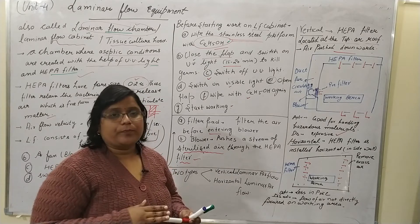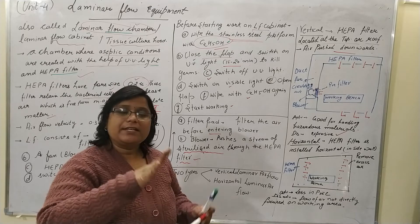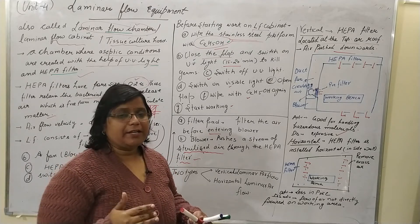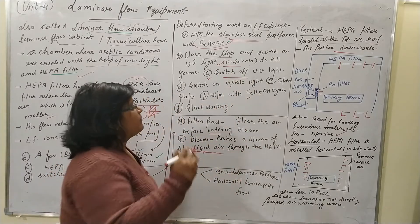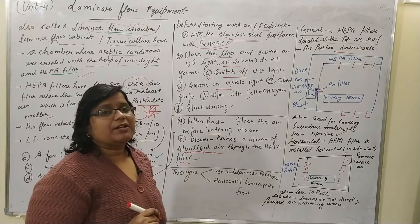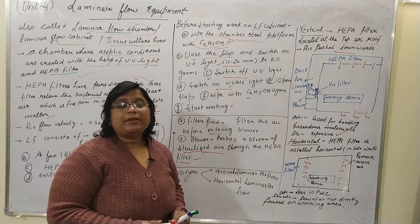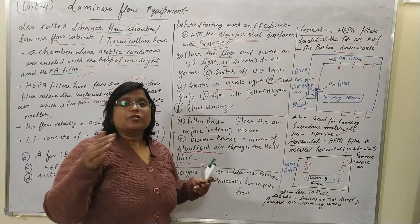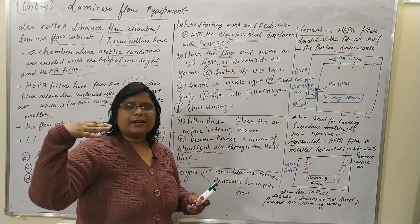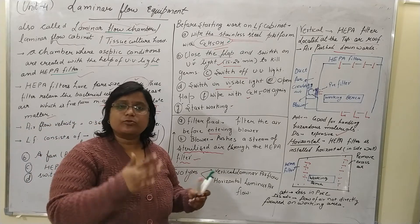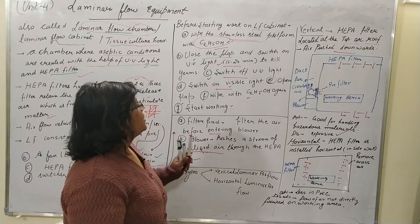UV light is harmful for microorganisms but also harmful for you, so just switch it on and keep away. After 15 to 20 minutes, switch off the UV light, then switch on the visible light. We switch on the visible light because the laminar airflow cabinet is covered on three sides, making it quite dark inside — the visible light works like a simple tube light.